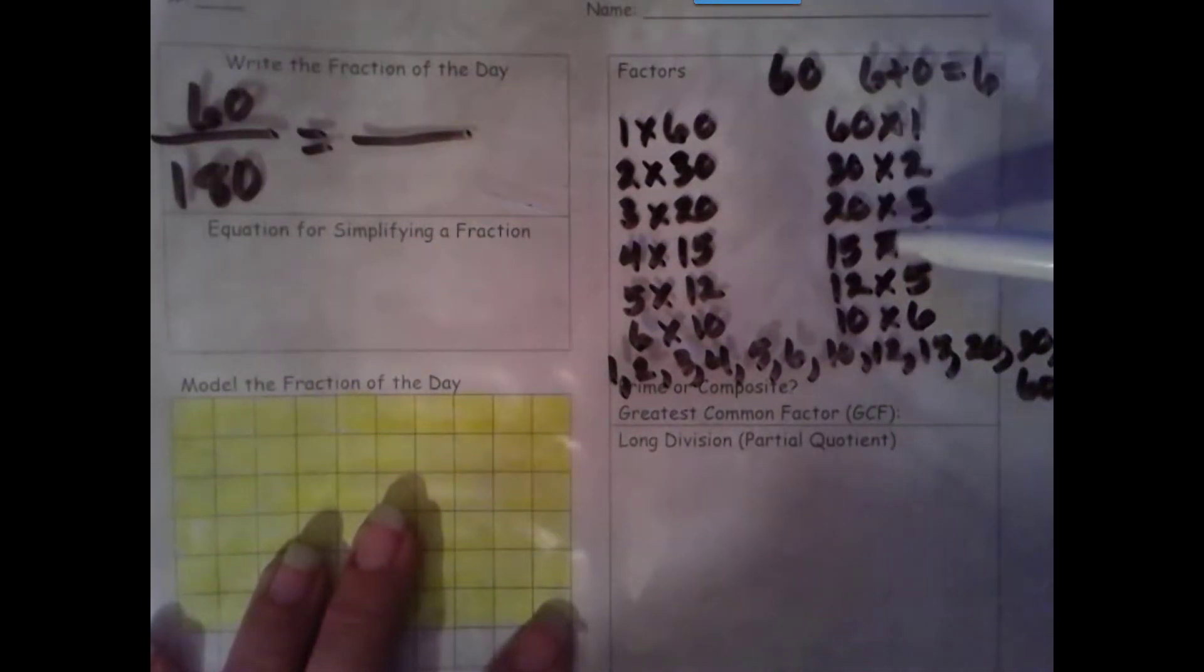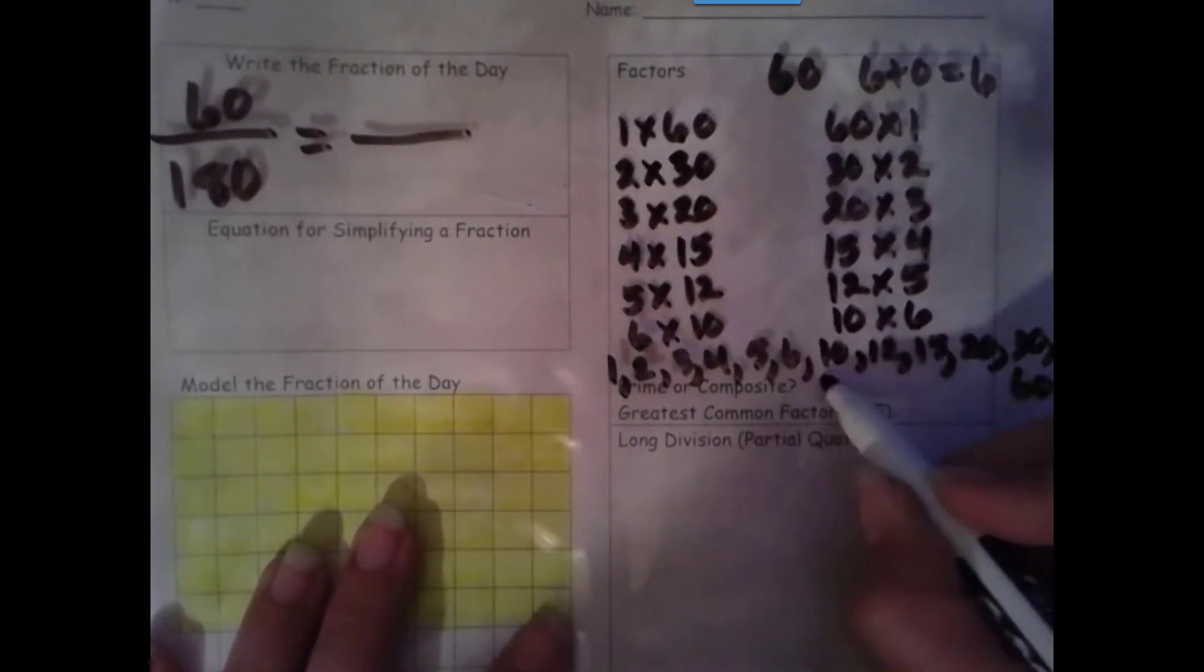Let's see. We have 2, 4, 6, 8, 10, 12 factors. I think that's the most we've had so far. That is definitely more than 2 factors, so it is composite.